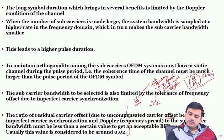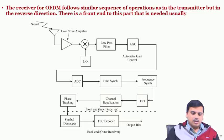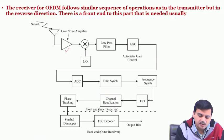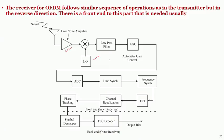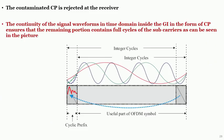The overall receiver flow is: low noise amplifier, local oscillator for down-conversion, low pass filter, automatic gain controller, analog-to-digital conversion, time synchronization, and frequency synchronization. Time and frequency sync are very important. At the receiver, the cyclic prefix is rejected and only the useful OFDM symbol portion is passed to the DFT/FFT operation. If timing synchronization is imperfect and one starts processing at a wrong point, one stretches beyond the OFDM symbol and the cyclic prefix of the next symbol enters.